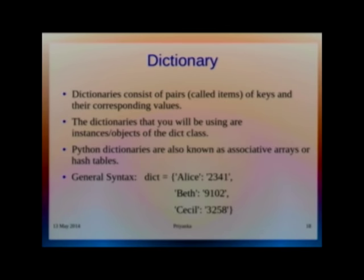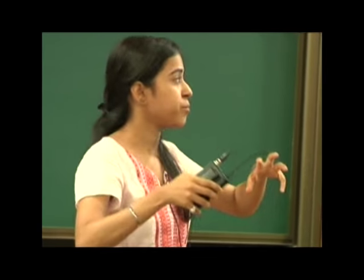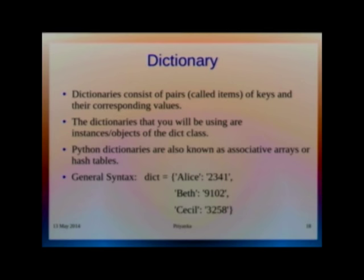Then dictionary. Dictionary is like an address book. In an address book, you have for example a name, then the corresponding address. In dictionary what we do is it consists of pairs - keys and the corresponding values. For every value, you have some key to represent it. The dictionaries you will be using are instances or objects of the dict class. In further slides, I will explain the class thing. Here it's like we have some dict class in our Python libraries. Whenever you declare or use a dictionary, it will always be an object of dict class. Python dictionaries are also known as associative arrays or hash tables. If you remember hash tables, there also we have keys corresponding to values. That's why we compare dictionary with associative arrays or hash tables.